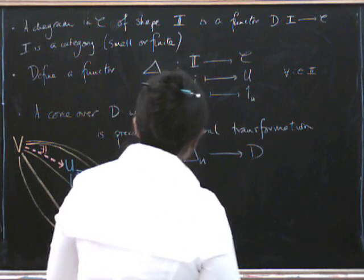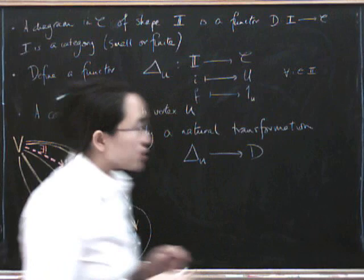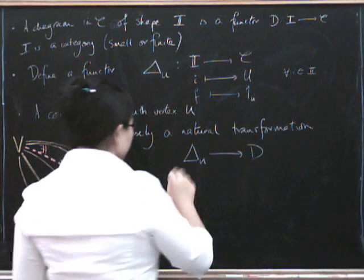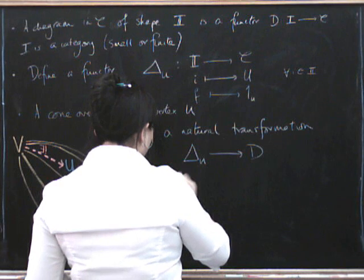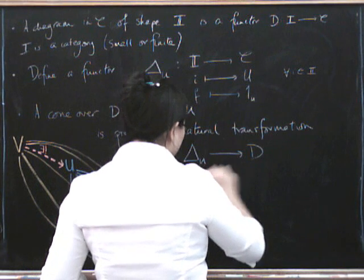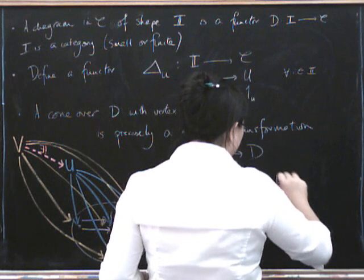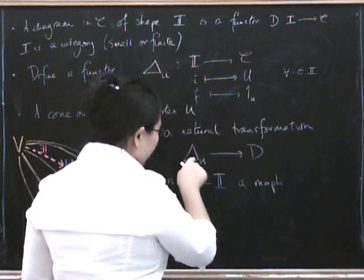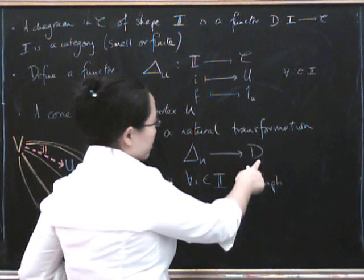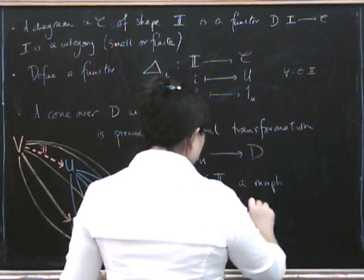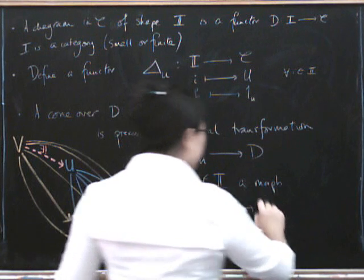Let's just see what this natural transformation gives us. So it gives us for every object of I, a morphism, so this is for all objects i in I, a component of the natural transformation. So it has to go from this of i to that of i. Now this of i is just U. And this of i is D of i.